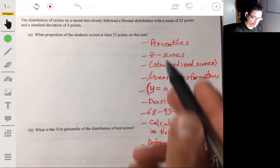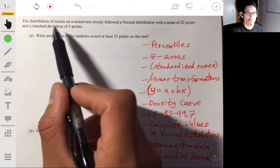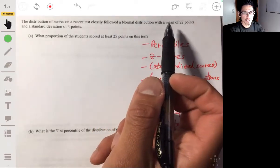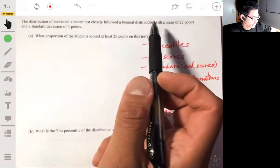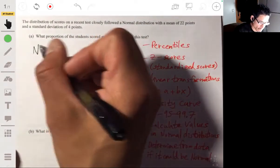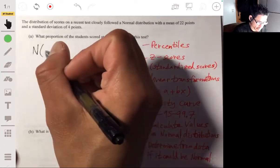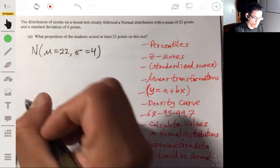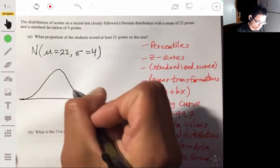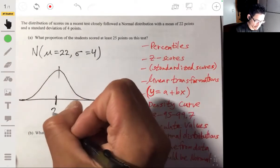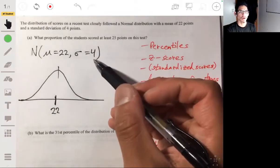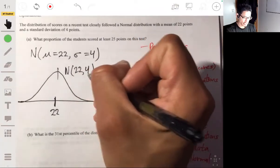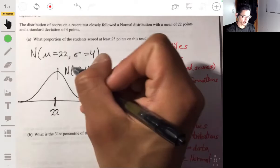Here we have: the distribution of scores on a recent test closely follows a normal distribution with a mean of 22 points and a standard deviation of 4 points. So if it's normal and has a mean of 22, so μ equals 22, standard deviation equals 4. Let's draw a bell curve. The middle center will be 22. Know this notation N(22, 4) - this basically tells you that the mean is 22 and the standard deviation is 4 and that the curve is normal.